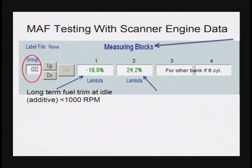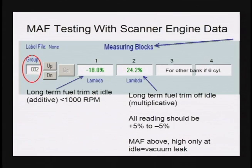If I look at the fuel trim in measuring block number two, I'm going to find long-term fuel trim above idle, which is called multiplicative. Multiplicative is long-term fuel trim at higher rpm. This is very important because by using this, I can very quickly with my scanner make a judgment of where I want to spend my time fixing a car — whether it's a vacuum leak or a contaminated mass airflow. These measuring blocks help me get that done very quickly.